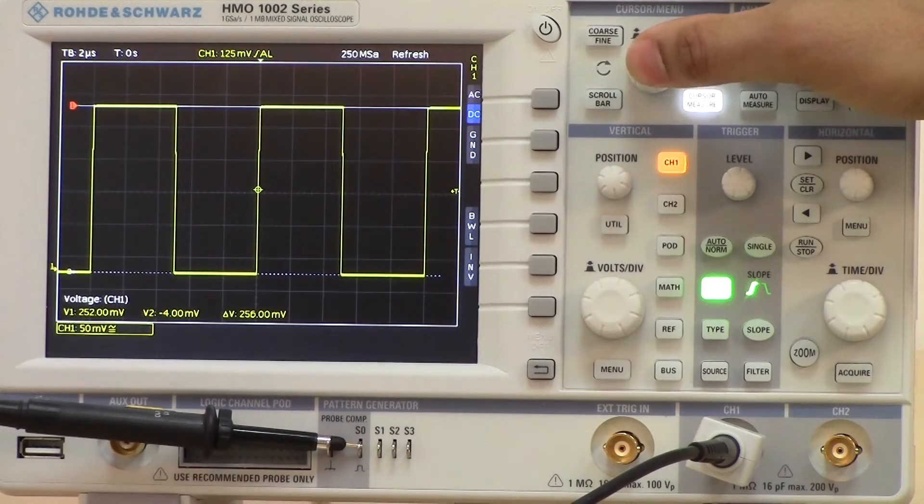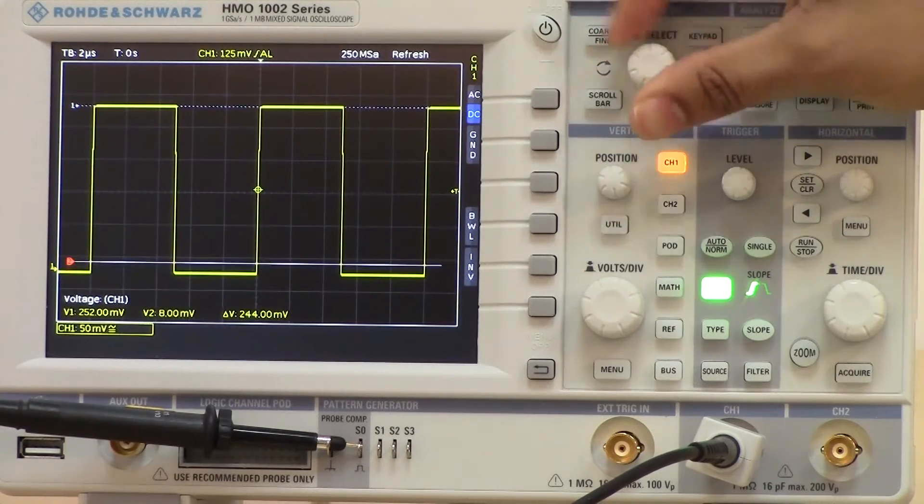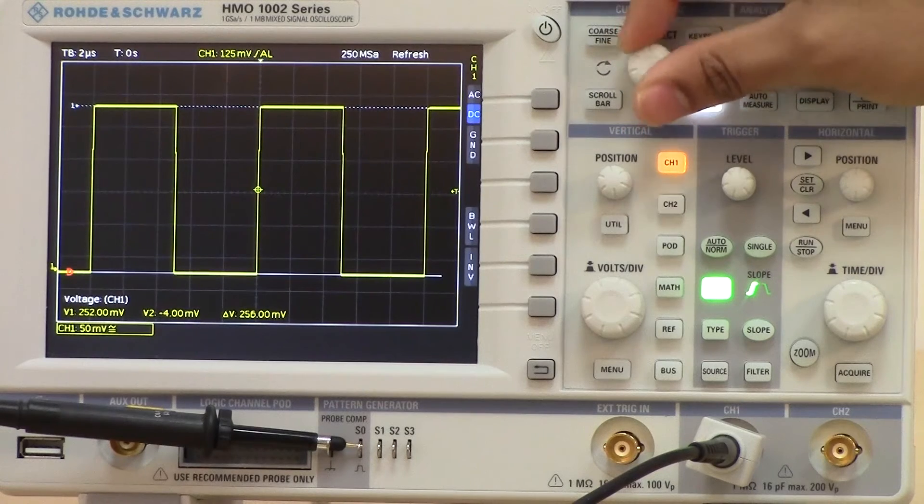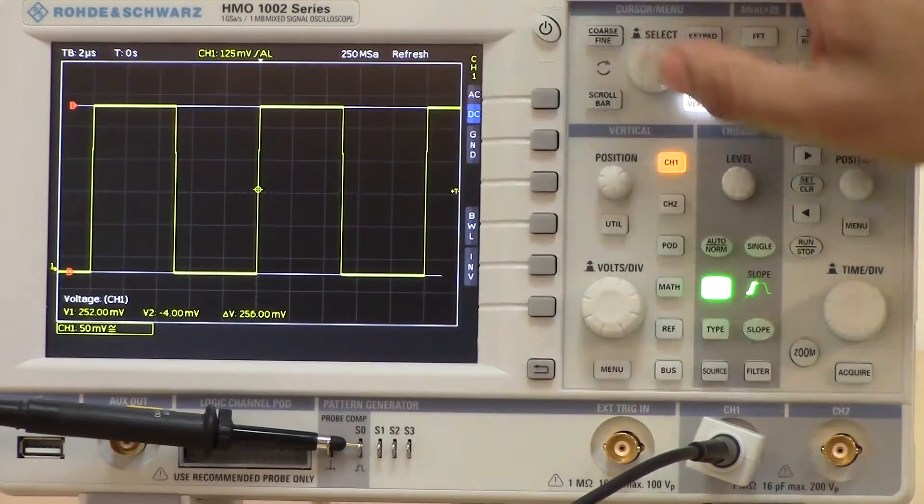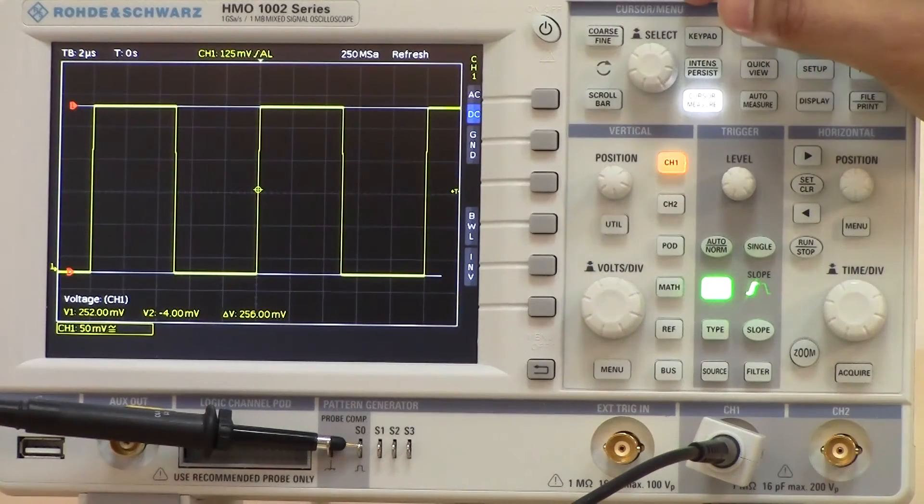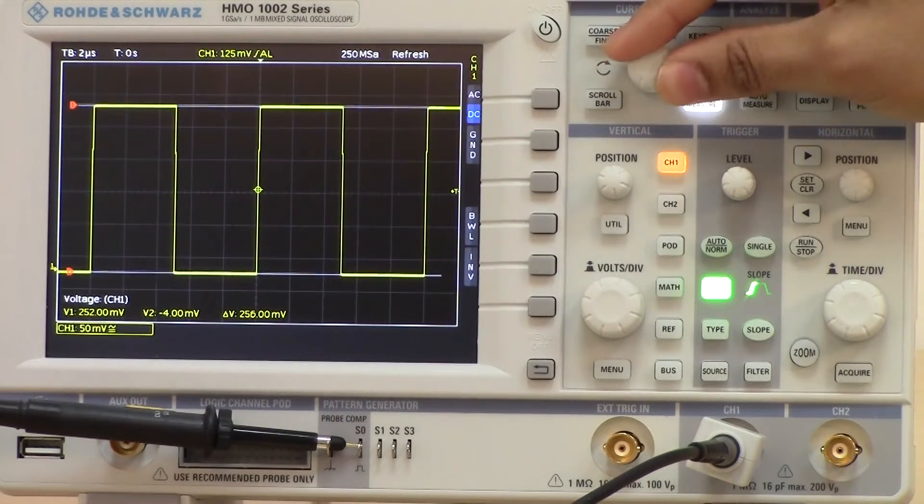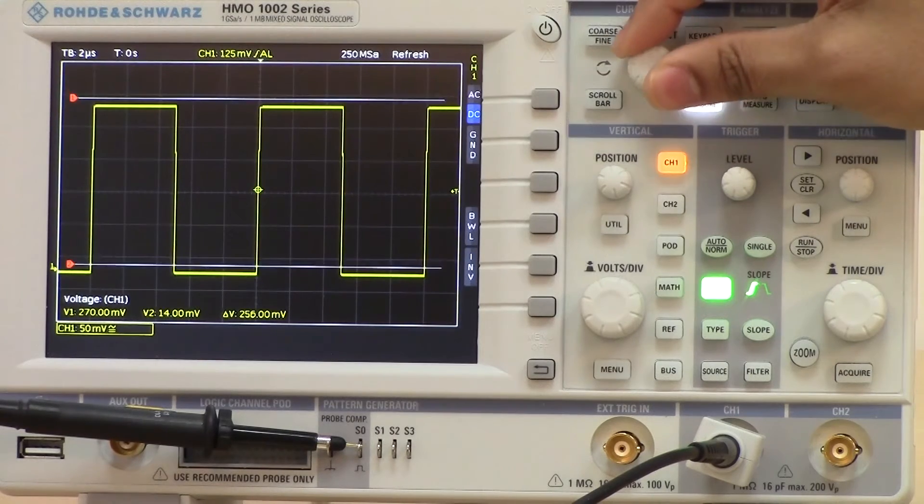If you press the select key again, it jumps into the second cursor. If I press this once more, it ties the two cursors together so that if I change the first cursor, the second cursor follows it as well.